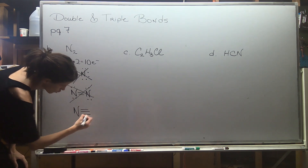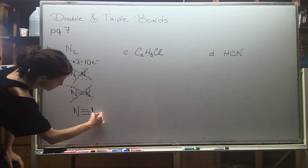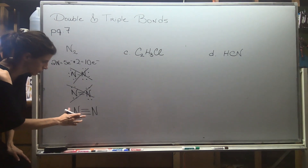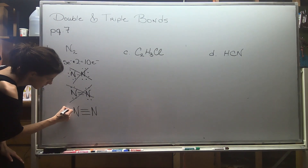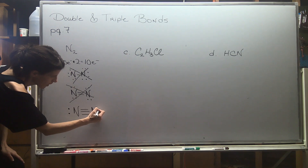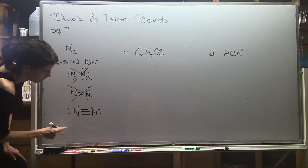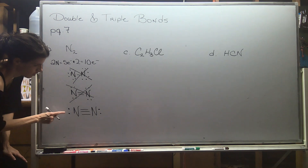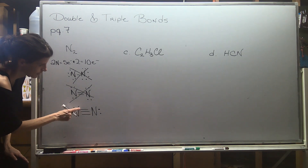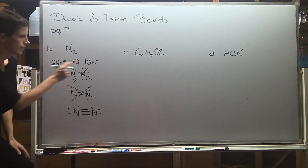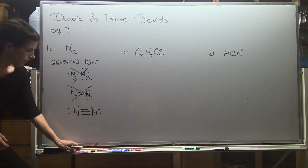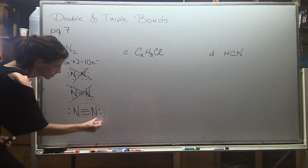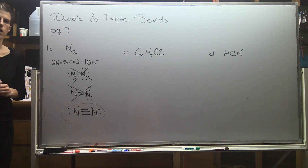If I triple bond the two nitrogens, each currently has six electrons from the bond, so I just need to put one lone pair on each one to reach eight. Counting all electrons: two, four, six, eight, ten — now I've used exactly 10 electrons. So diatomic nitrogen has a triple bond.